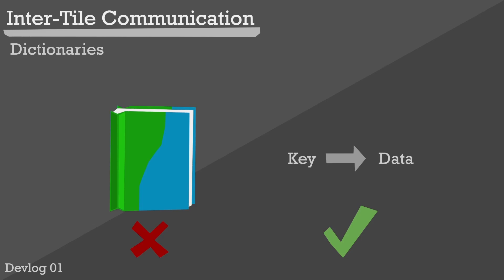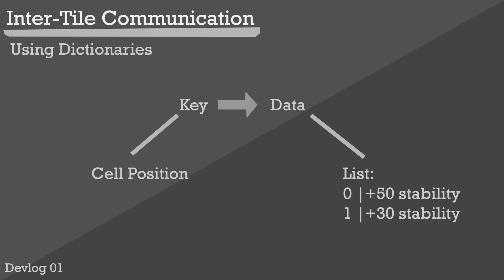We have a customizable piece of data called a key which can be used to access customizable information. We would use this dictionary by setting the key as the cell position in which we want to change and having the data as a list of the stability changes we want to make to that tile.